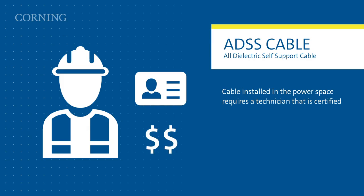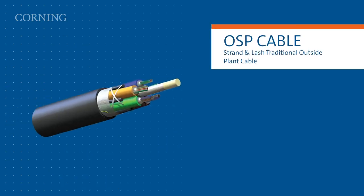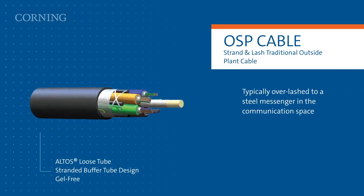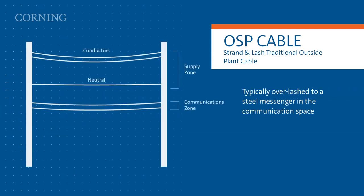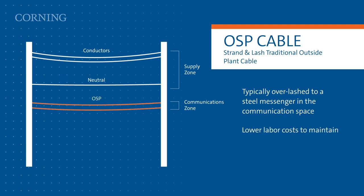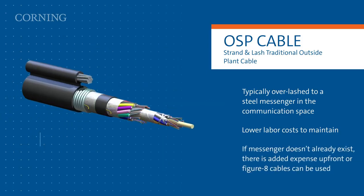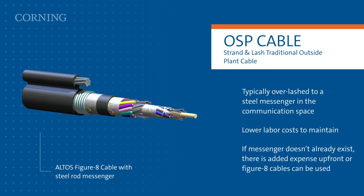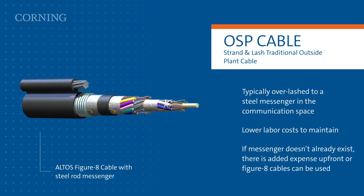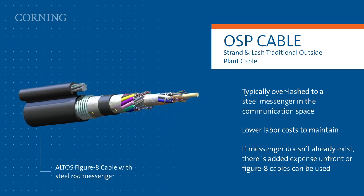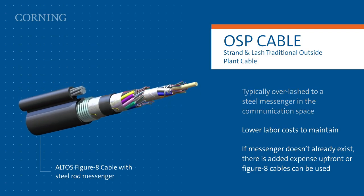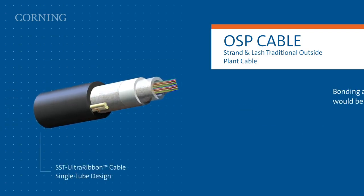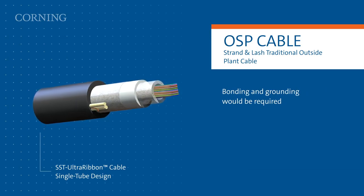Alternatively, traditional gel-free OSP cables are typically overlashed to a steel messenger in the communication space. Technicians working in this space do not require electrical certifications, lowering the labor costs to deploy and maintain. If a messenger doesn't already exist, there is added expense upfront, or figure-eight cables can be used. However, these types of installation methods support additional cables along the same strand for simple incremental network upgrades. Additional bonding and grounding would be required for armored designs.